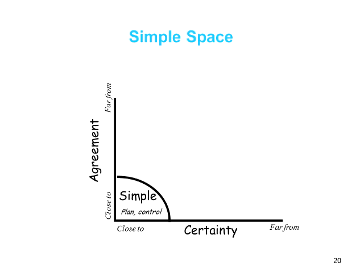Along the bottom of this matrix is the degree to which we have research knowledge about how to produce a certain desired outcome — the degree of certainty dimension. Along the side is a dimension about the degree to which key stakeholders agree about what ought to be done. So when we are in simple space, there's a high degree of certainty about how to produce a desired outcome and a high degree of agreement. An example would be the worldwide commitment to eradicate polio. We know how to eradicate polio — we have a vaccine. The World Health Organization has developed campaign techniques, and the world has made a commitment through the United Nations, UNICEF, governments, and WHO to make eradicating polio a worldwide priority.